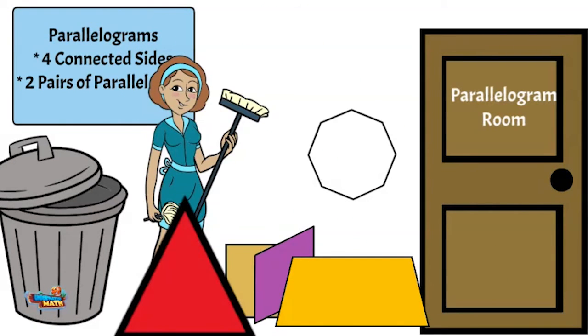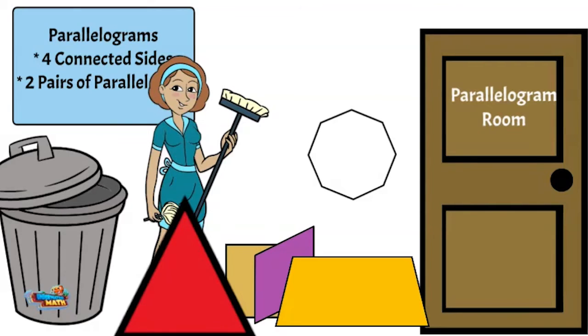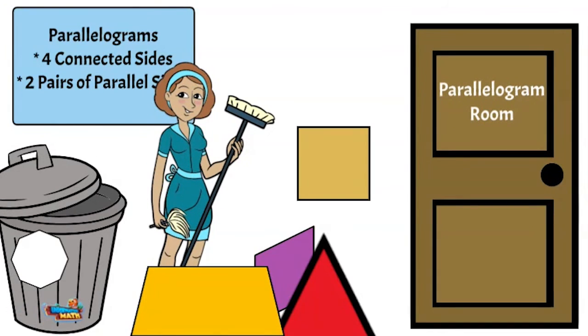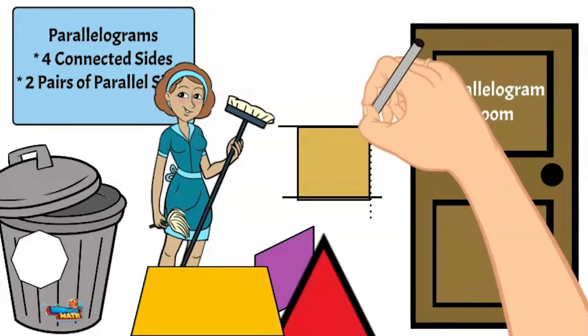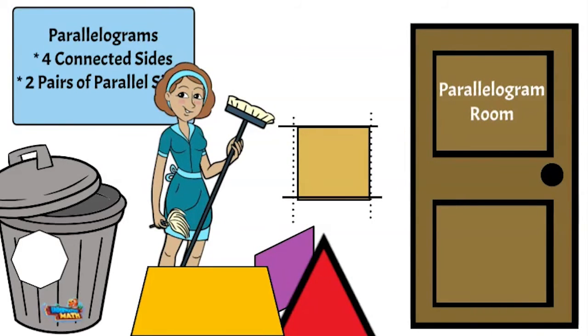Time to work. First shape is an octagon. He has eight sides. Throw him out. A parallelogram has only four sides. Let's see. A square has four connected sides and two pairs of parallel sides. He can go in.